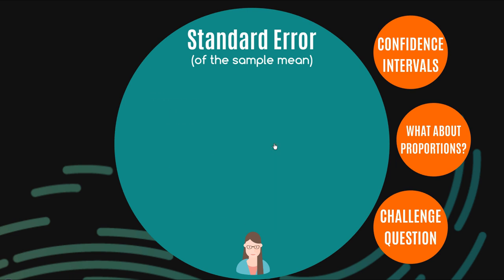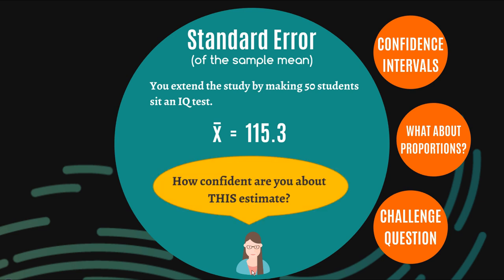Now let's extend the study by making 50 students sit an IQ test. So instead of having five students, we now have 50 students. And let's just say we've got their average, which is 115.3. Again, I'm going to ask us, how confident are you about this estimate? Well, because we have more students in the sample, we'd be more confident that this reflects the true population mean, right? There should be less variation around this figure, so we're starting to get a bit more confident.